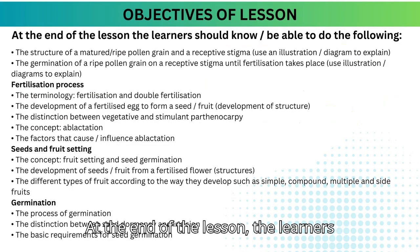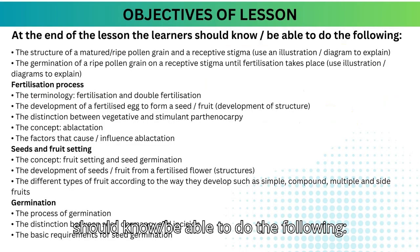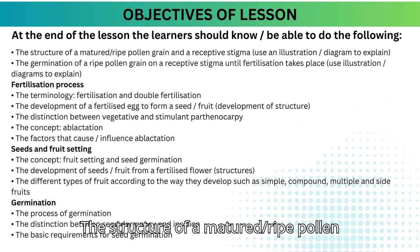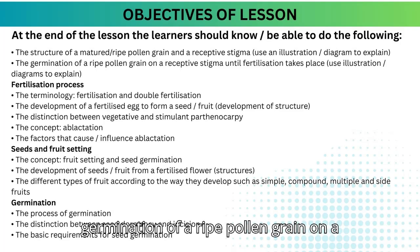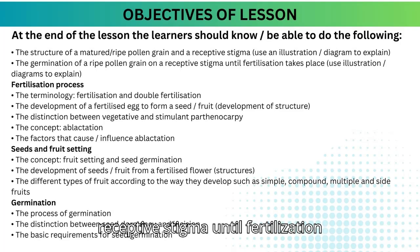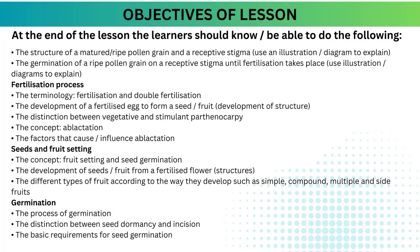At the end of the lesson the learners should know and be able to do the following: the structure of a matured or ripe pollen grain in a receptive stigma, using an illustration or diagram to explain the germination of a ripe pollen grain on a receptive stigma until fertilization takes place.